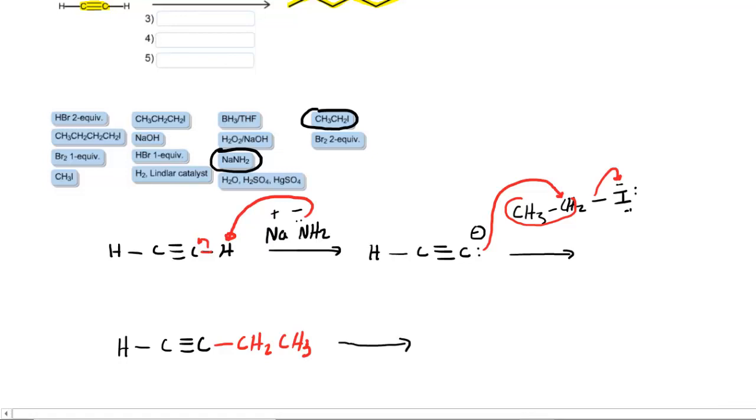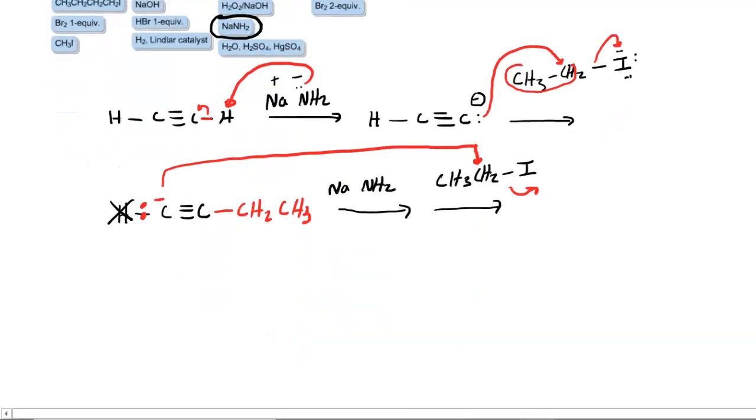If we do this two-step mechanism again where we add the sodium amide and then the ethyl iodide, this terminal hydrogen will be removed, we'll form the lone pair of electrons and a negative carbon there, and that's going to attack at that same carbon while the iodide leaves again. We place an additional two carbons on the left side of the molecule.